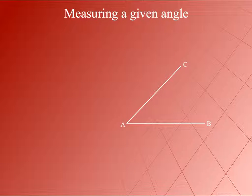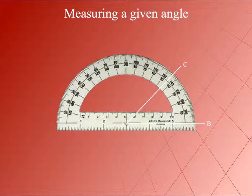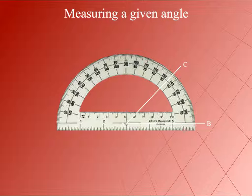Measuring a Given Angle. When we measure angle CAB in the figure shown here, we place the protractor so that its center lies on the vertex A and its zero line lies on the side AB of the angle CAB. Now we read the mark that lies on the side AC of the angle CAB on the inside scale of the protractor. We observe that the 45 degree mark lies on side AC.